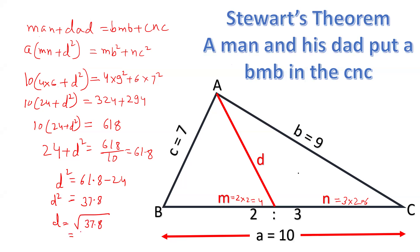So the value of d will be under root 37.8, which can be approximately 6 point something, let us say 6.2. The value of d is approximately 6.2.